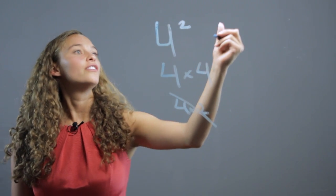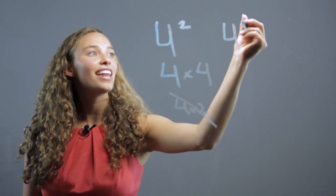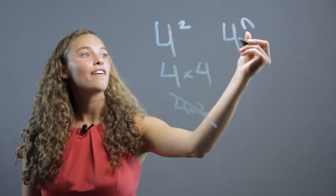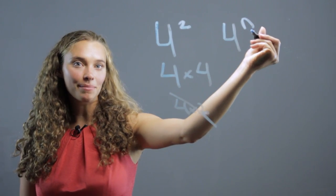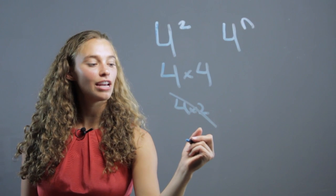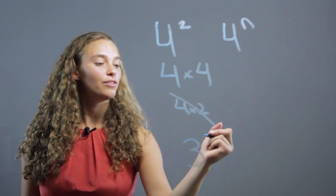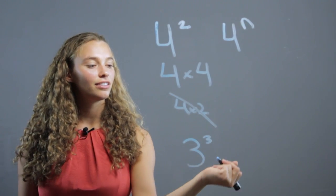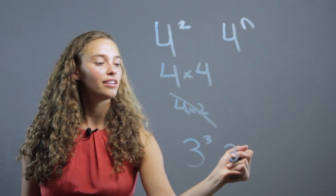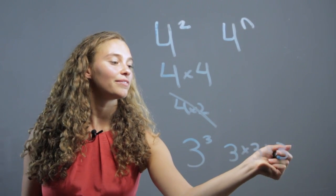So if you have four to the n, it'll be four n times. If you have a number like three to the third, that means three times three times three.